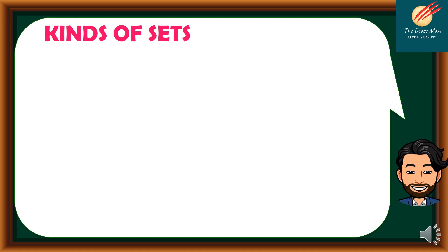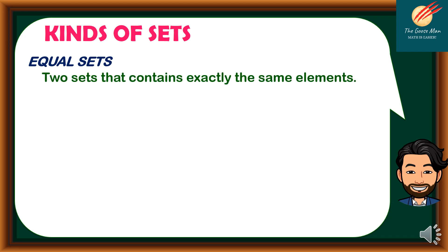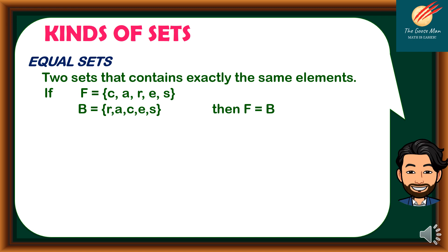Let's move on to another kind of sets: equal sets or equivalent sets. Equal sets are two sets that contain exactly the same elements. For instance, if F = {C, A, R, E, S} and B = {R, A, C, E, S}, since all elements of B are in F and all elements of F are in B, then F = B.